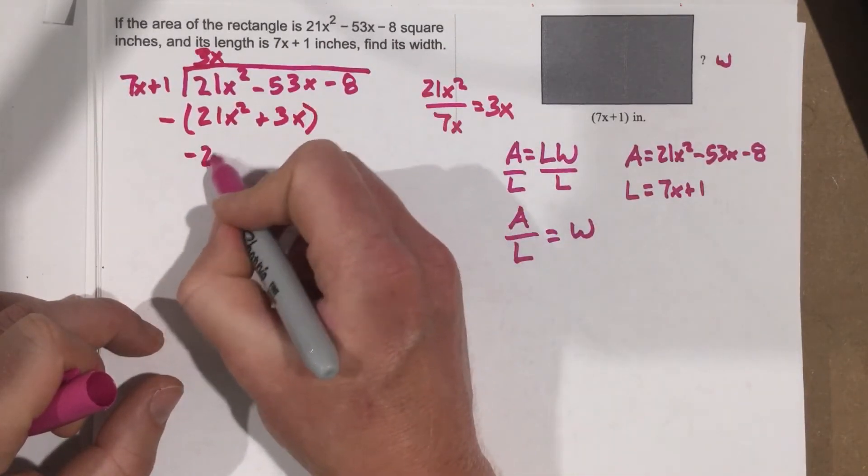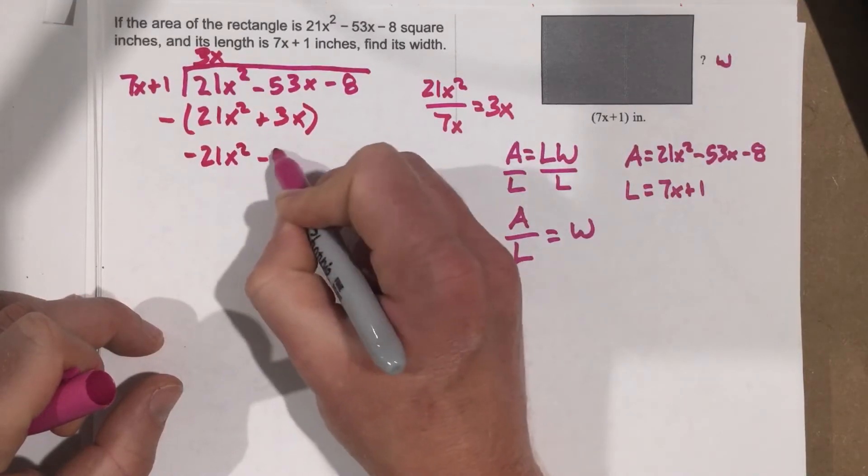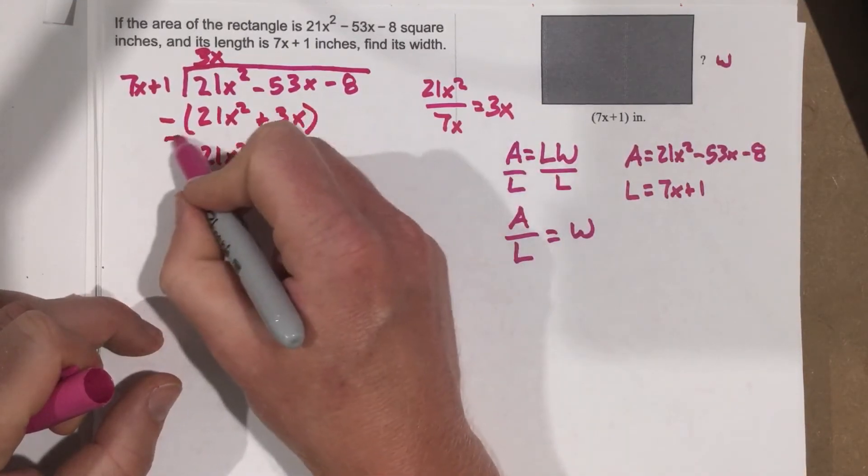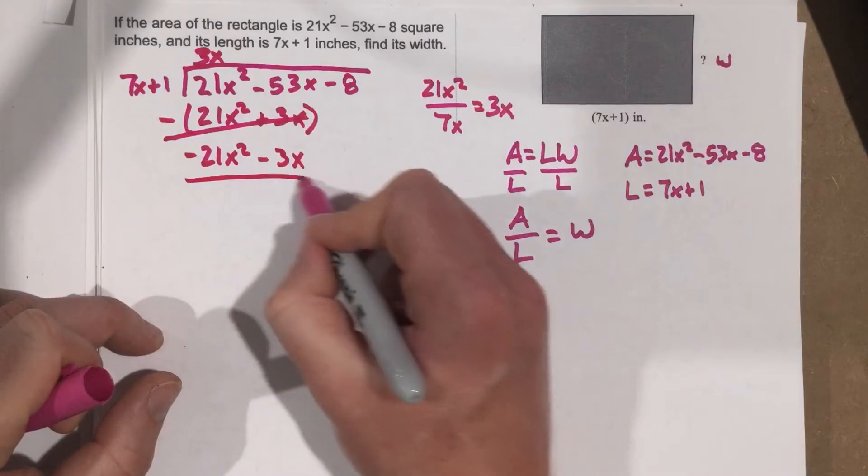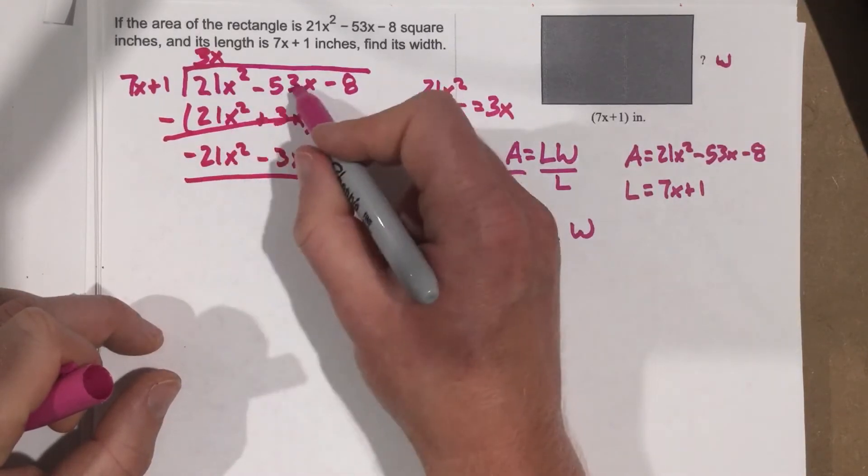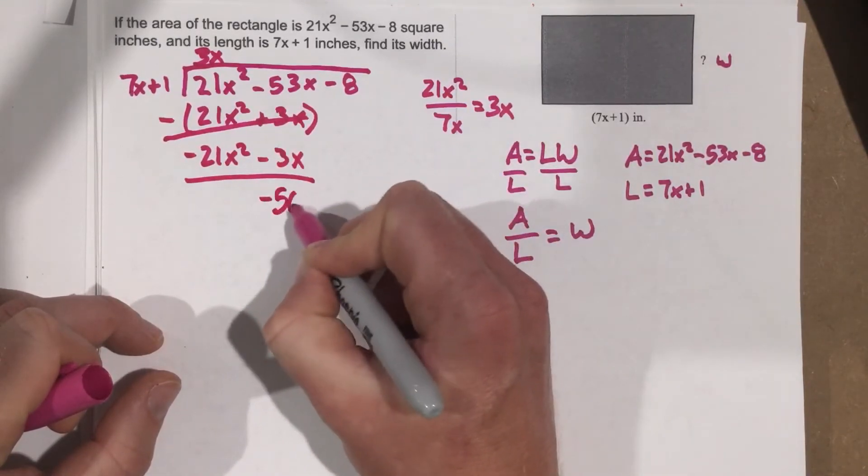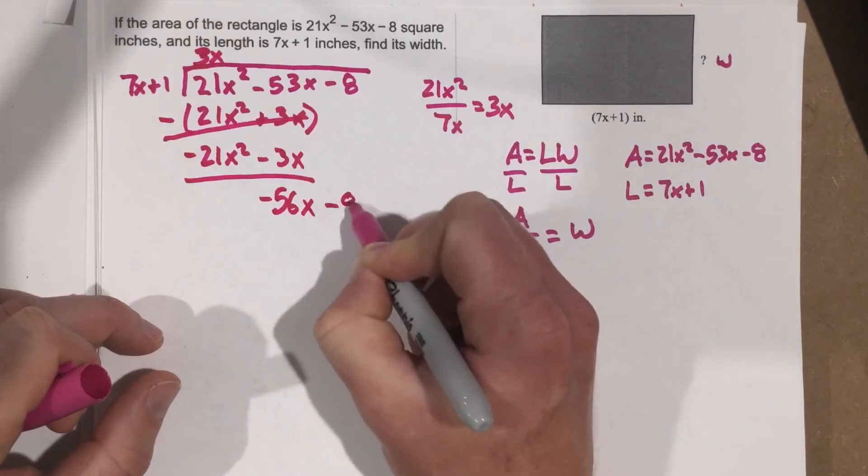We're going to subtract. That's negative 21x squared when we distribute. So we can cross this out. And that's going to give you, that cancels, that gives you negative 56x. Bring down the negative 8.